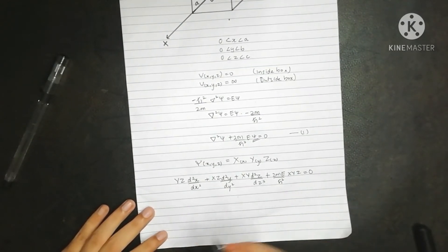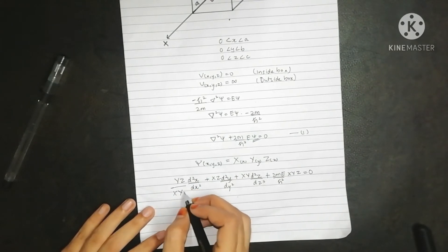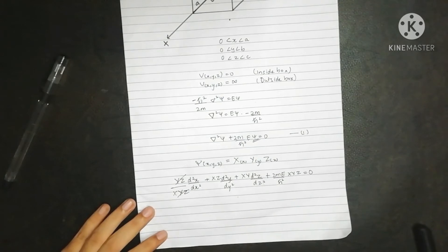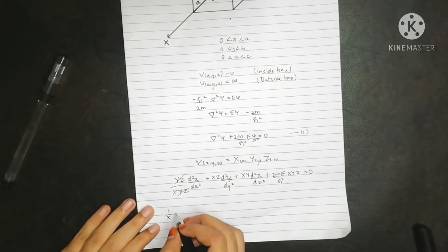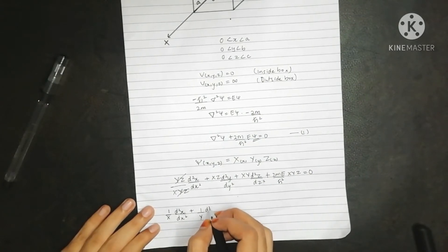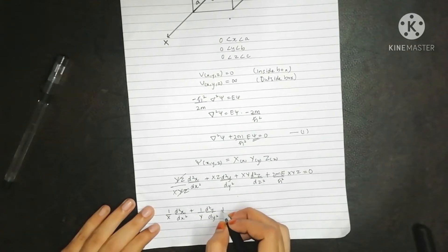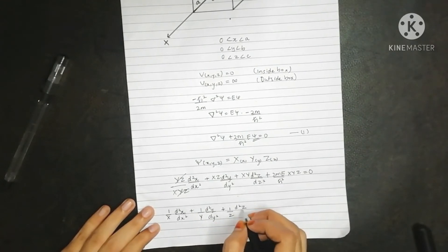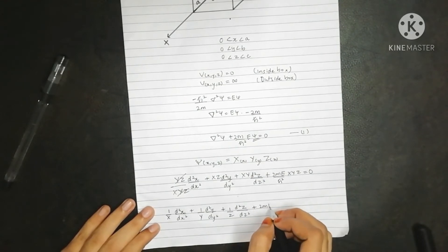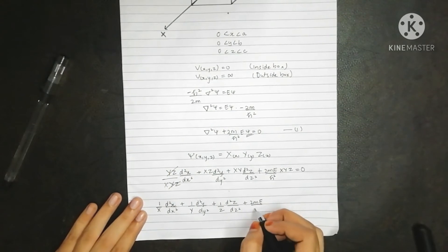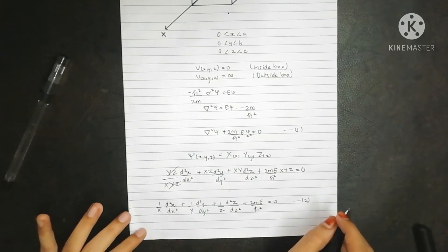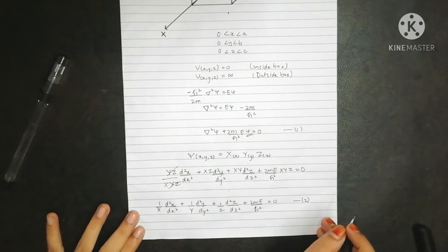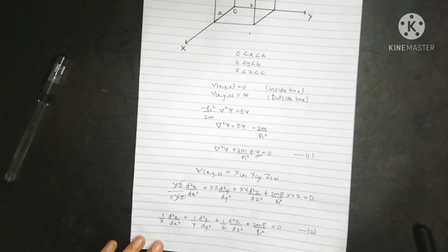Now divide the whole equation by X·Y·Z. The terms simplify and we are left with: (1/X)(d²X/dx²) + (1/Y)(d²Y/dy²) + (1/Z)(d²Z/dz²) + 2mE/h-bar² = 0. Let's call this equation 2. This equation gives three independent equations in x, y, and z.